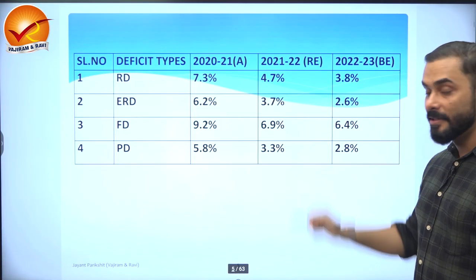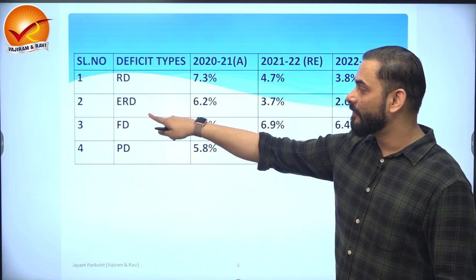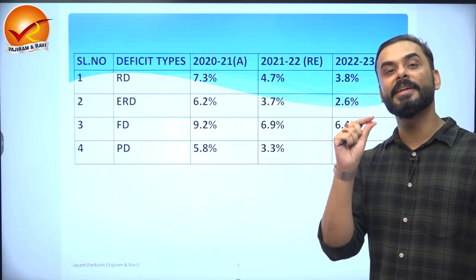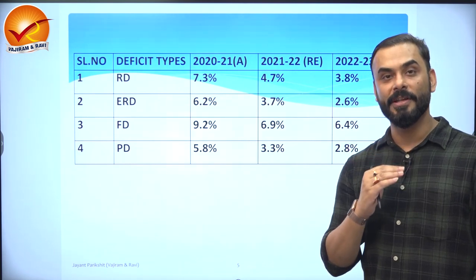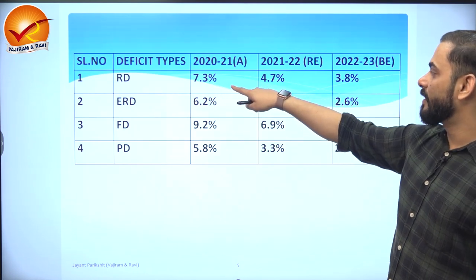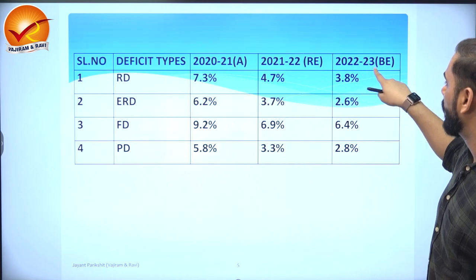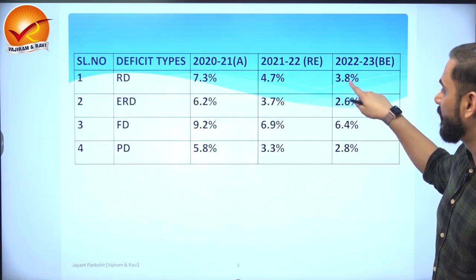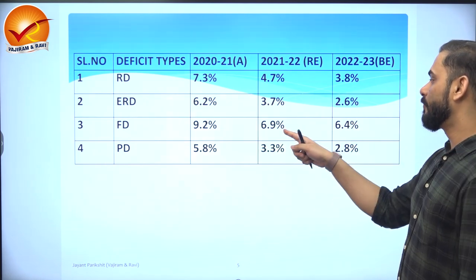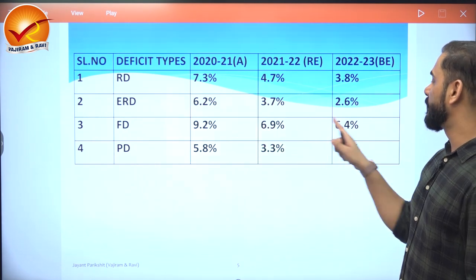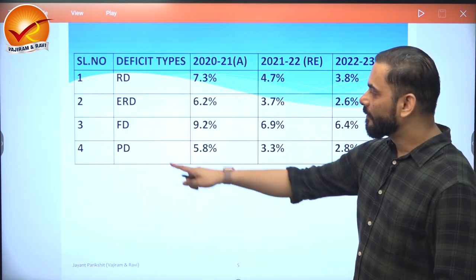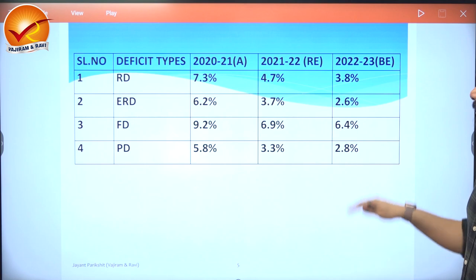Looking at the current deficit situation in India: revenue deficit was 7.3% in 2020-21, improving to 4.7% in 2021-22, with a budgetary estimate of 3.8% for 2022-23. Effective revenue deficit is also improving. Fiscal deficit went from 9.2% to 6.9%, with a target of 6.4% — still high because of COVID. Government borrowings remain elevated. Primary deficit moved from 5.8% to 3.3% and is targeted at 2.8%. The government wants to keep all deficits at low levels.